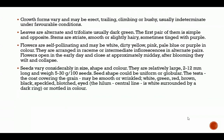The growth forms of cowpea in general vary and may be erect, trailing, climbing, or bushy — usually indeterminate under favourable conditions. Leaves are alternate and trifoliate, usually dark green. The first pair of leaves is simple and opposite.